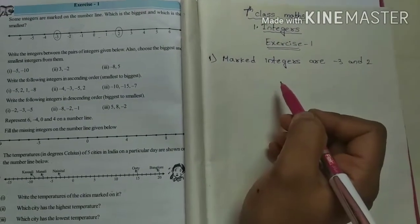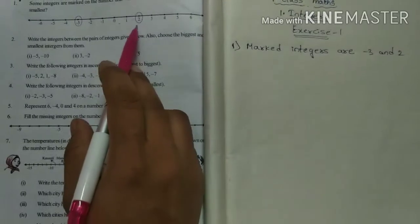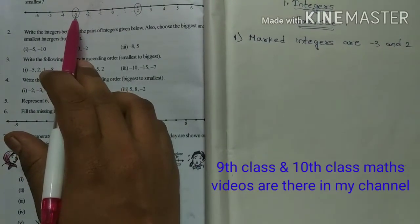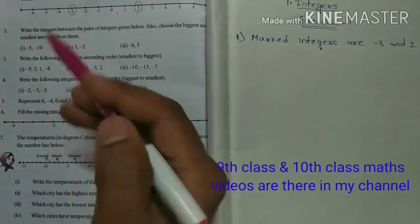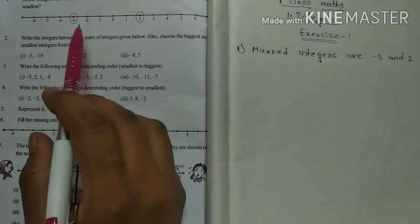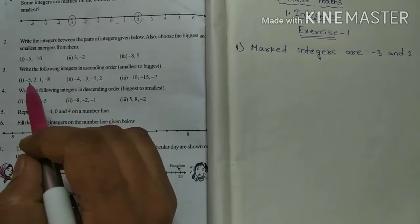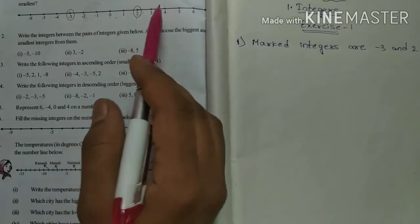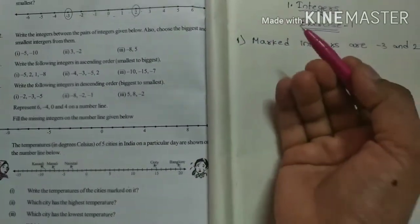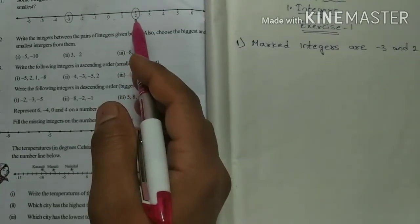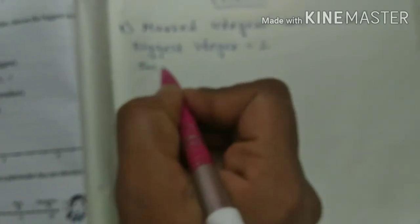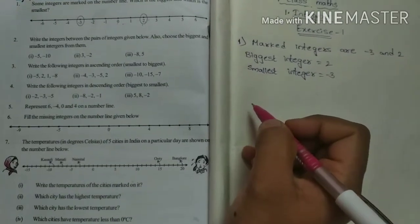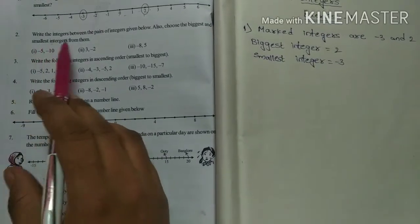Write like this: marked integers are minus three and two. Here, two is the utmost right of minus three, so two is the biggest integer. And minus three is on the left side of two, so it is the smallest integer. This is the answer for the first problem.